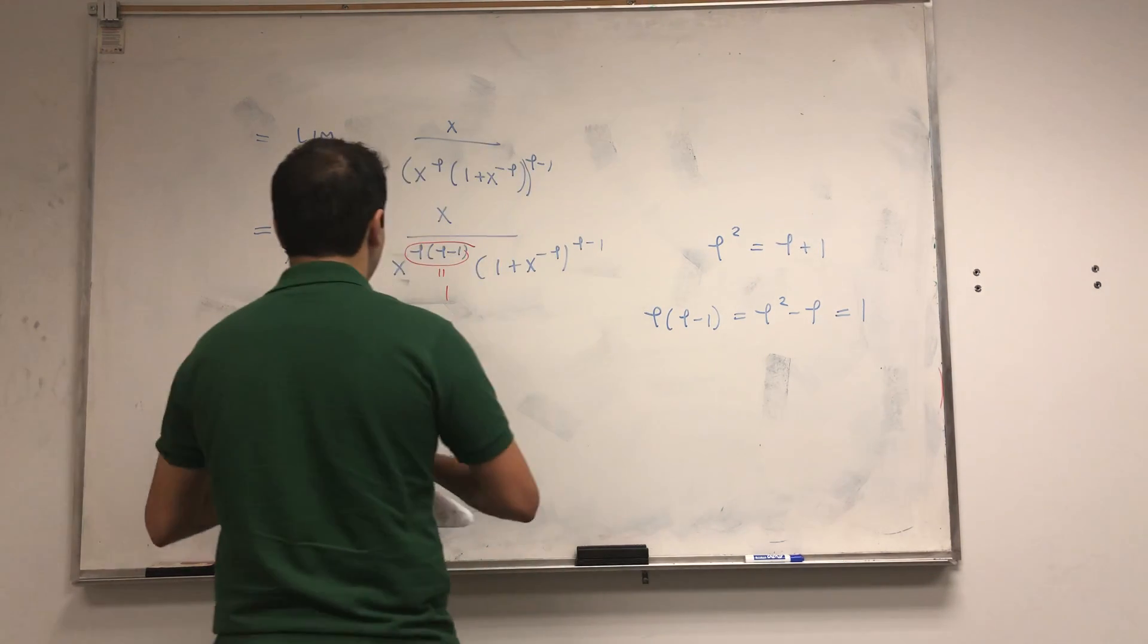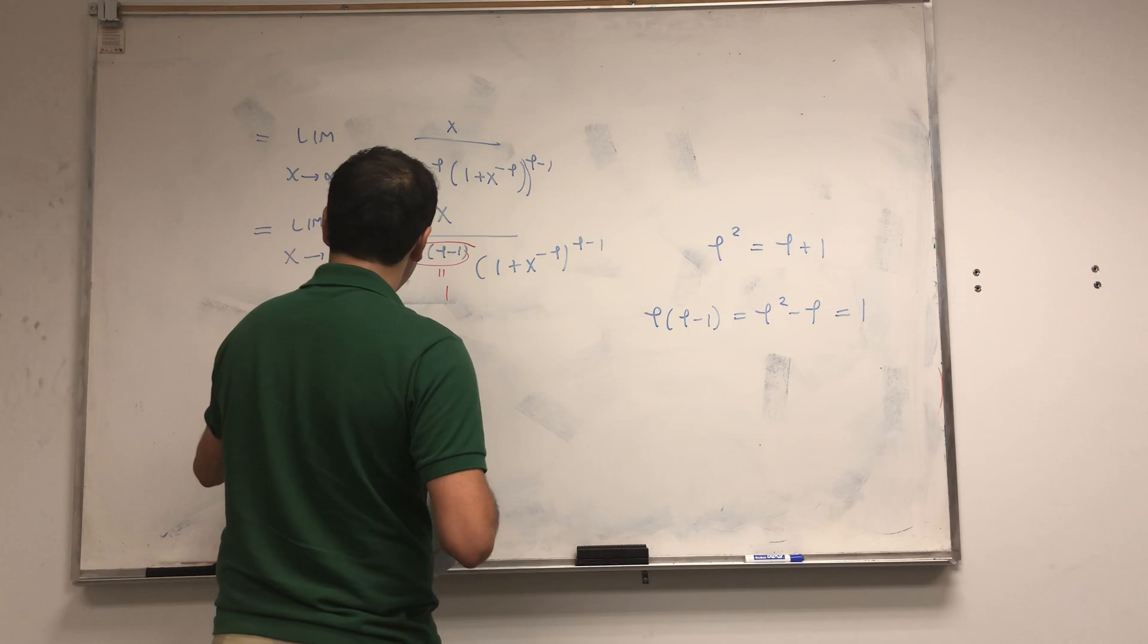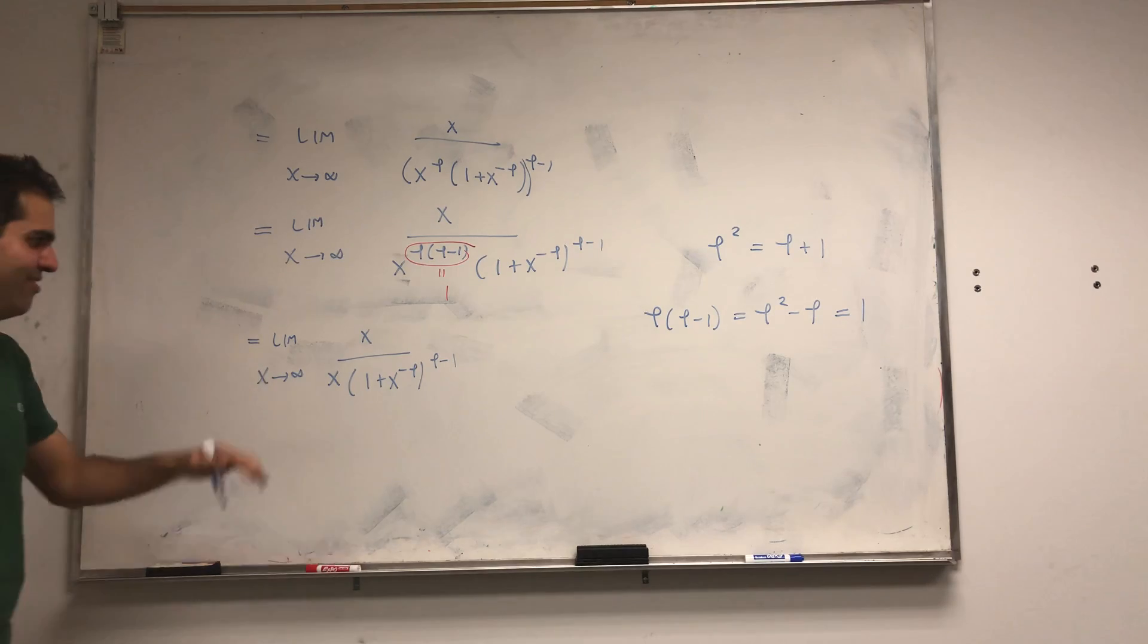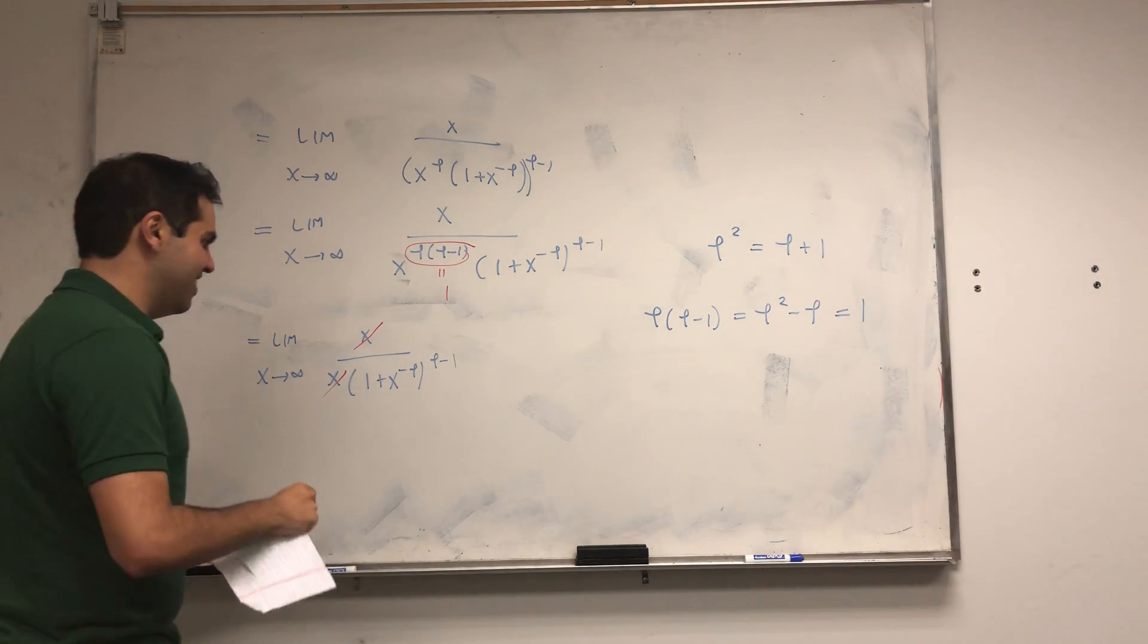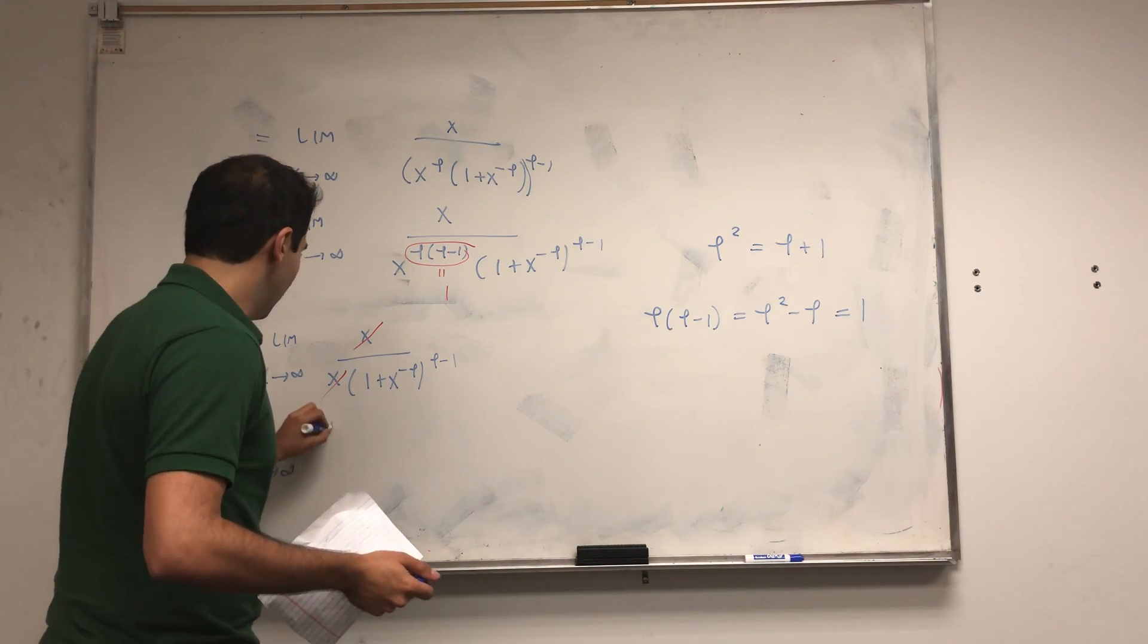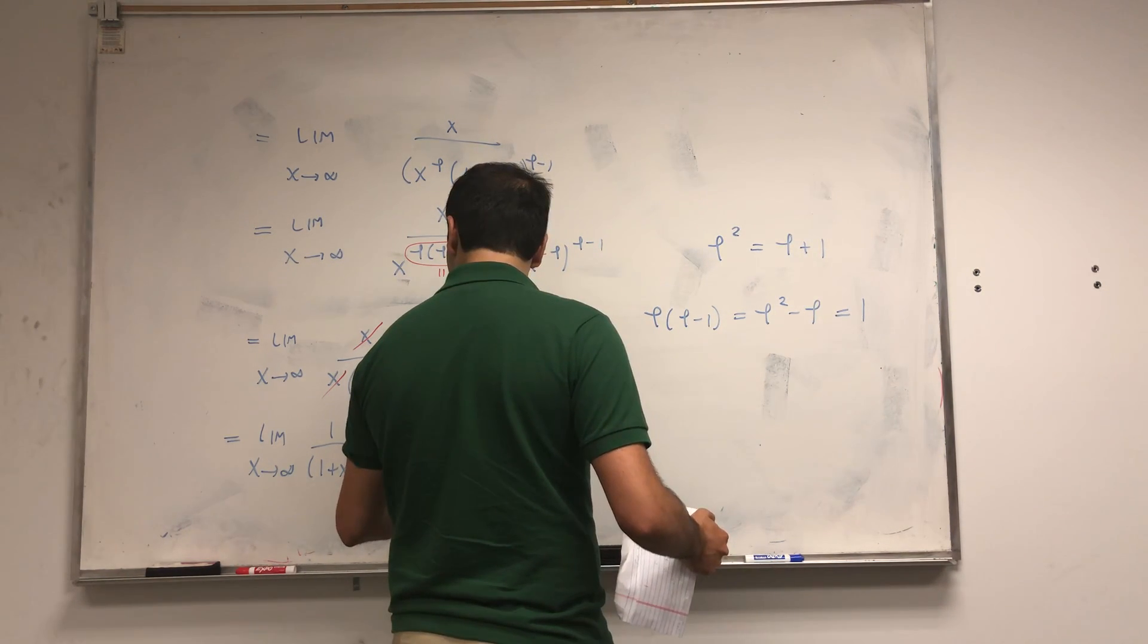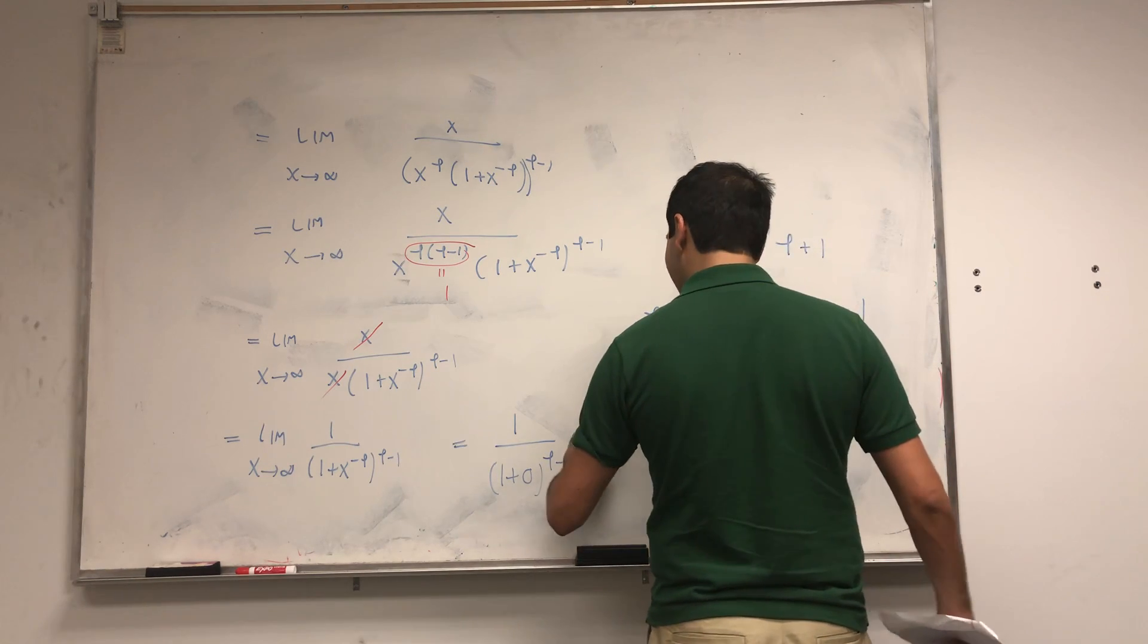So you're left with the limit as x goes to infinity of x/(x times (1 + x^(-phi))^(phi-1)). It's cool—it's like this battle between x's and phi's, and right now the x's seem to be winning. Except, oh no, the x's cancel out and the phi's actually win. You're left with the limit as x goes to infinity of 1/(1 + x^(-phi))^(phi-1). If you do that, you get 1/(1 + 0)^(phi-1). This is finite, so we're fine, and then we have one.